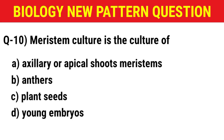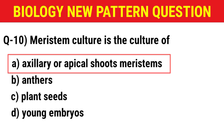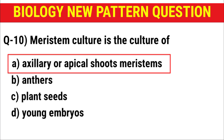Next question: Meristem culture is the culture of — (A) axillary or apical shoot meristems, (B) anthers, (C) plant seeds, (D) young embryos. The correct answer is option A: axillary or apical shoot meristems.